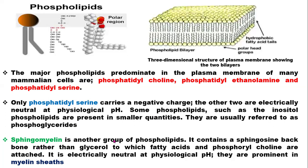Sphingomyelin is another group of phospholipids. It contains a sphingosine backbone rather than glycerol, to which fatty acid and phosphorylcholine are attached. It is electrically neutral at physiological pH and is prominent in myelin sheaths. Sphingomyelin is the type of phospholipid found in myelin sheaths. These myelin sheaths help insulate the nerves, just like the plastic rubber covering a copper wire — serving as an insulator.